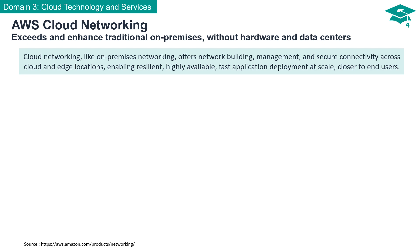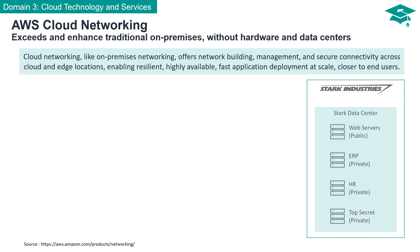As we follow Stark Industries' transformation from on-premises data centers to the AWS Cloud, we'll explore the solutions AWS offers to secure resource isolation in a shared cloud environment. Imagine a large on-premises data center where Stark Industries operates its business. Within this data center, Stark Industries houses public web servers and private servers handling critical functions like ERP, HR, and top-secret information.